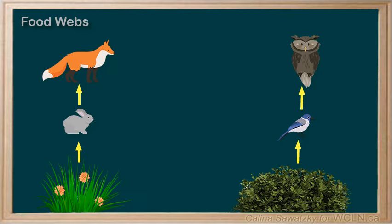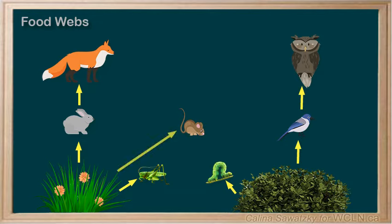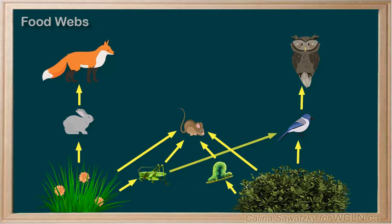These nice and tidy food chains definitely help us understand the way that nature transfers energy from one species to the next. But, as you know, nature isn't quite so tidy. For example, a grasshopper also loves grass. A caterpillar also loves berry bushes. A mouse would enjoy either grass, berries, or even a grasshopper or caterpillar. A small bird would not only enjoy berries, but would also be very happy to get energy from a grasshopper or a caterpillar.